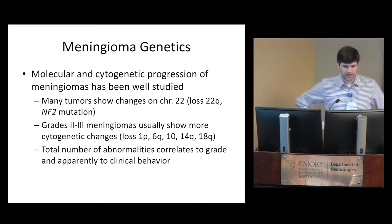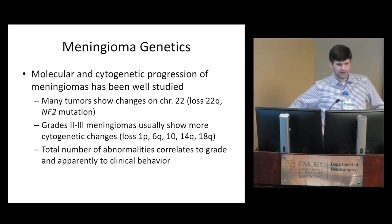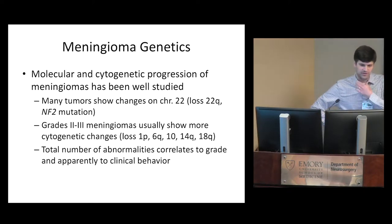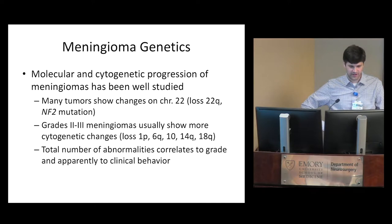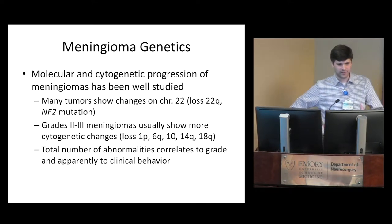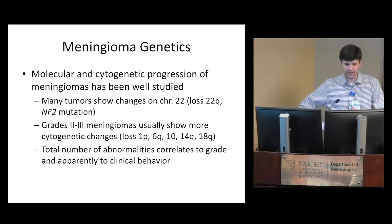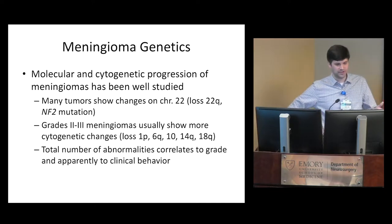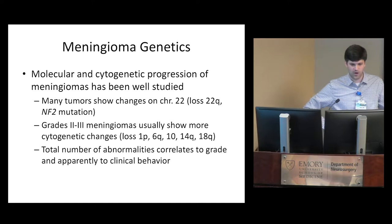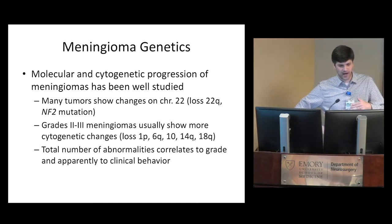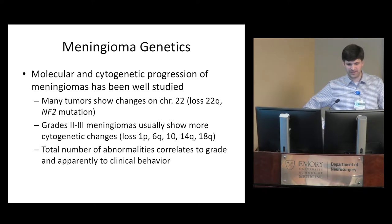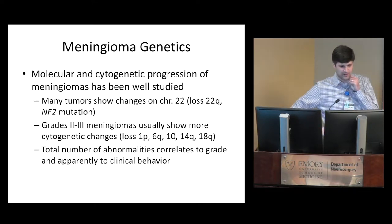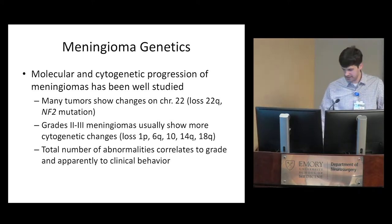Meningiomas were studied extensively cytogenetically because they grow well in culture. Grade 1 meningiomas show no chromosomal abnormalities or maybe a loss on chromosome 22, where NF2 is. Higher-grade meningiomas usually show more cytogenetic changes: classic losses are on 1p, 6q, 10, 14q, and 18q. The more abnormalities present, the more likely it is to be a higher-grade meningioma.